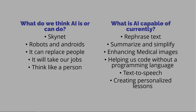AI is really good at rephrasing text, whether it's text from online or text you're creating yourself. It's really good at simplifying and summarizing things — like meeting notes that need to be shorter and organized. It's also getting really good at enhancing medical images, allowing doctors to see things they couldn't before. It's helping us code, with or without knowing a programming language. We've all heard a lot of text-to-speech, particularly on social media — anytime you hear a dog talking on social media, that's probably not the dog. It's also really good at creating personalized lessons.